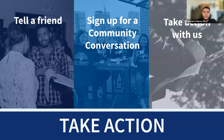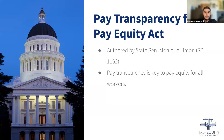So what can you do today? You can do three things right after you get off this call: tell a friend about our work; sign up for a community conversation, which is a one-on-one with me where we can talk more about your journey at Tech Equity and how you'd like to participate; or take action with us by becoming a volunteer and supporting some of our legislation. For example, the Pay Transparency for Pay Equity Act, also known as SB 1162, would make pay equity reports public so all workers have the information they need to ensure equal pay for equal work, and ensures companies post salaries in job descriptions and promotional opportunities to existing employees before selecting a candidate.